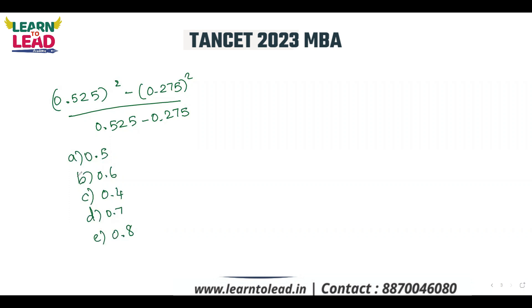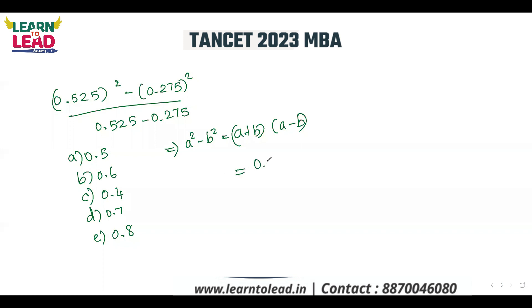0.8, ma'am. Yes — how is it 0.8? Use the A squared minus B squared formula. Very good. The A squared minus B squared formula is A plus B into A minus B. We know if we practice, we can use any formula.